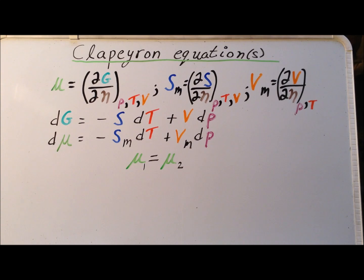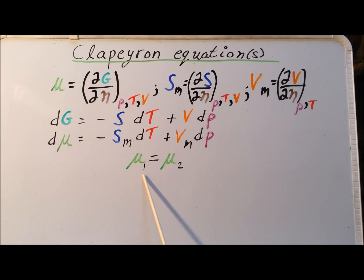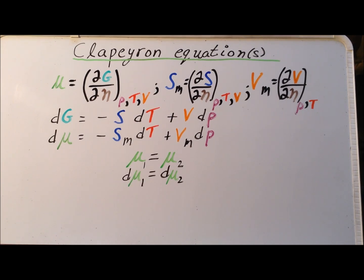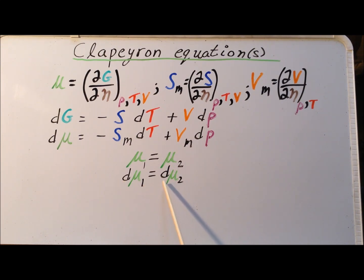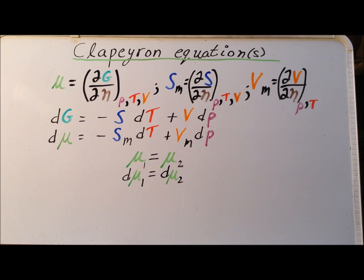Now, let us imagine that our substance undergoes a phase transition where both phases are in equilibrium. We can use a definition of equilibrium involving the chemical potential: the chemical potential of the first phase is equal to the chemical potential of the second phase at equilibrium. If mu sub 1 is equal to mu sub 2, likewise d mu 1 has to be equal to d mu 2. This allows us to gain further insight into the condition of equilibrium during a phase transition.